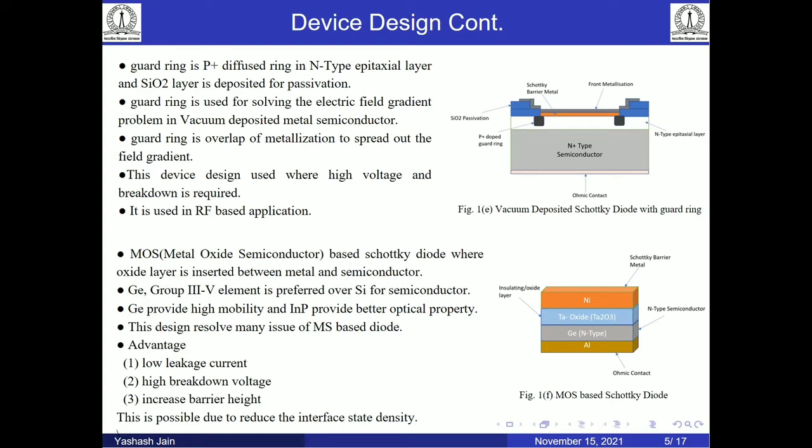The next important device design is the MOS-based structure — Metal Oxide Semiconductor — where an oxide layer is inserted between the metal and semiconductor. This reduces the interface state density, which is a non-ideal effect in metal-semiconductor types. By reducing interface state density, we observe higher barrier heights, higher breakdown voltage, and lower leakage current. It is the most prominent device used currently.